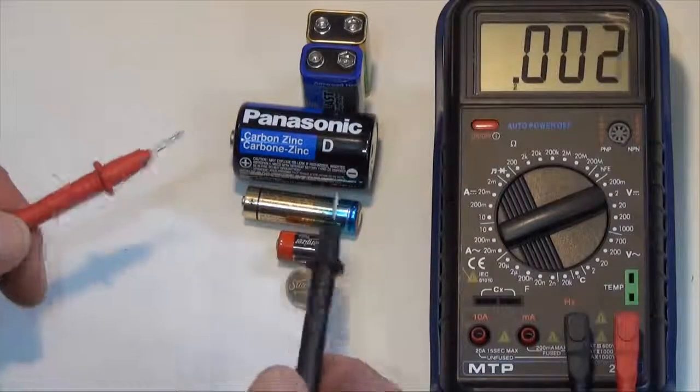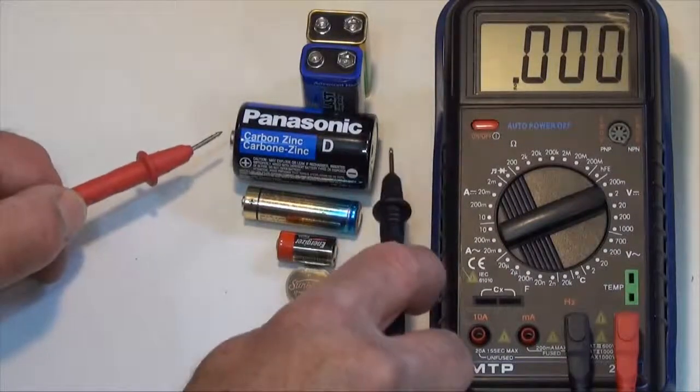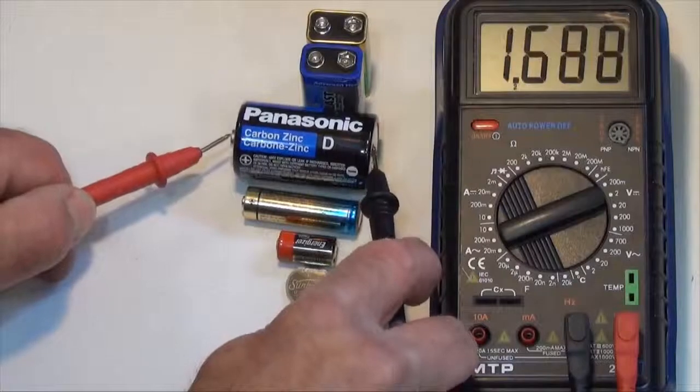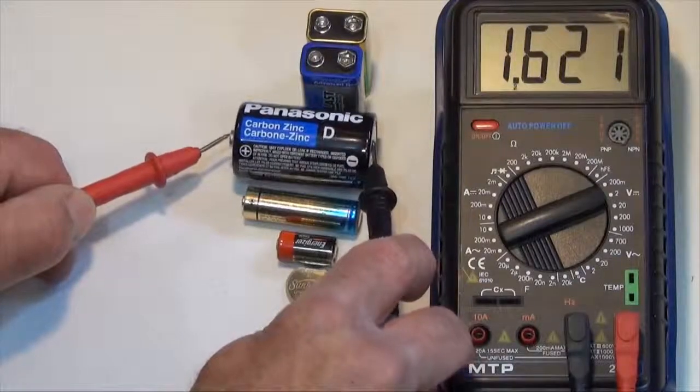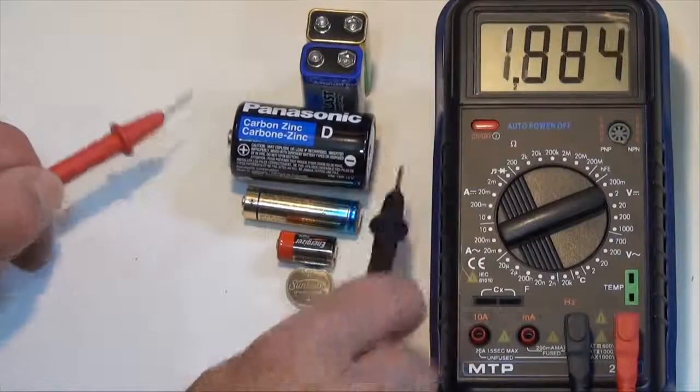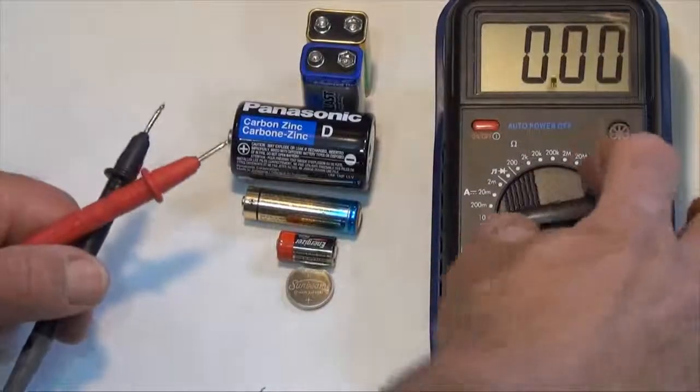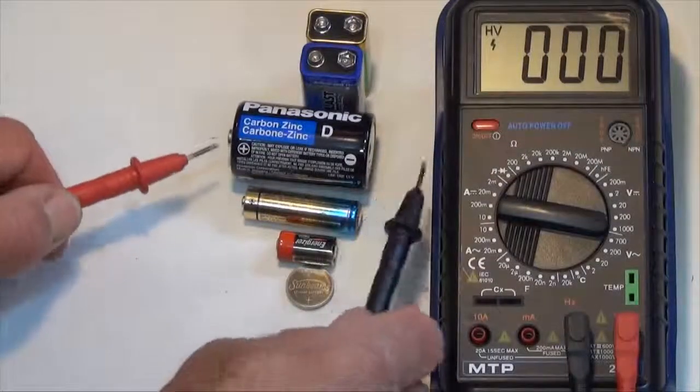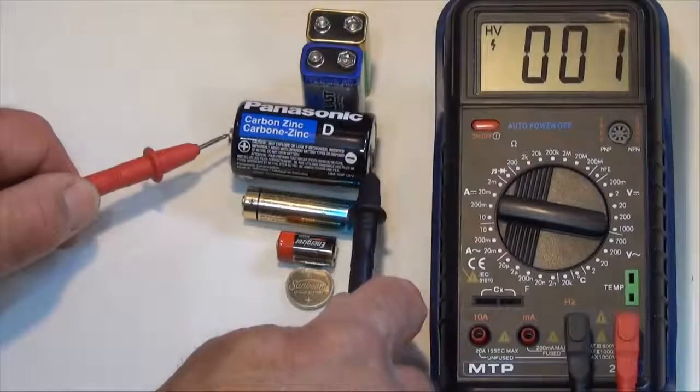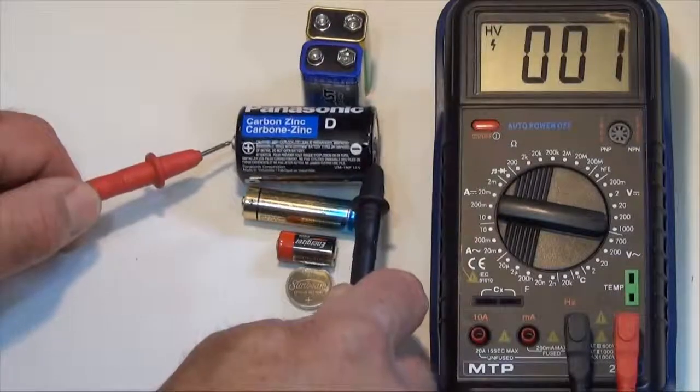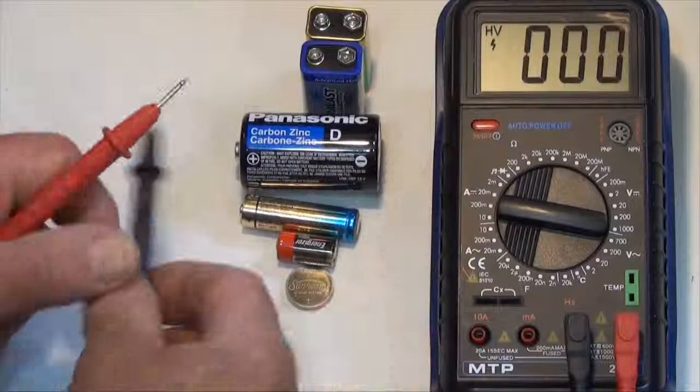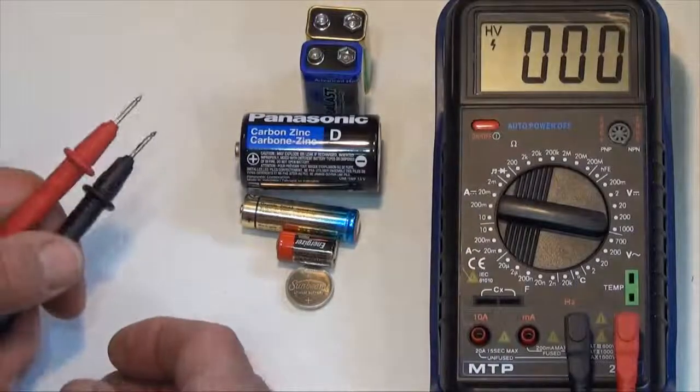Let's take a look at this classic D size battery, the carbon zinc. 1.621 volts. Let's see what happens if I go to the 1,000 volt range. Again, that won't be very accurate. I'll get a measurement, but let's see what we get. 1 volt. So you can see we lost a little bit of our voltage measurement by being on the wrong range.